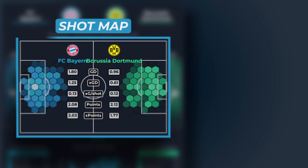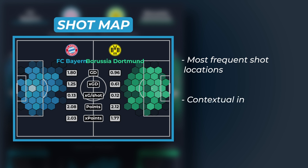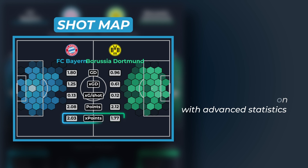The shot map preview highlights both teams' most frequent shot locations, with brighter regions indicating more frequent shots, while also including contextual information on a team's P90 values for metrics such as goal difference, expected goal difference, average XG per shot, points, and expected points.